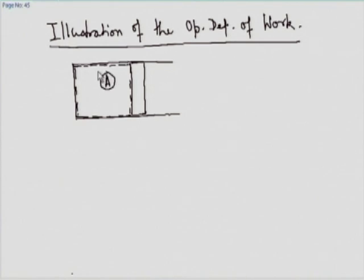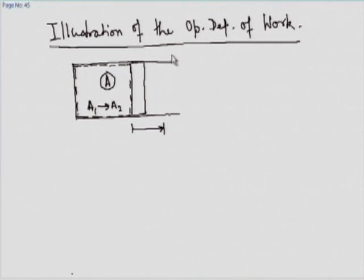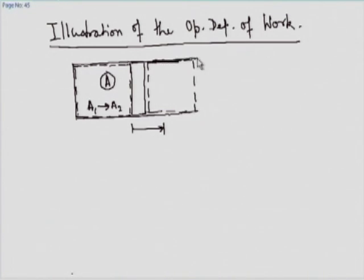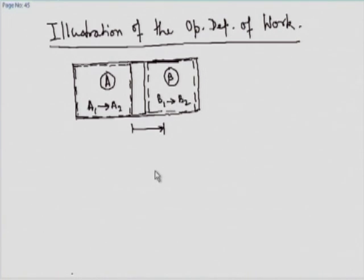Let us say this is our system A and it goes from state A1 to state A2, meanwhile expanding. What is system B? System B may be the other part of the piston, another fluid, which goes from B1 to B2. The pressure of A is higher, or A is being driven in such a way that this piston moves by a certain distance into B.